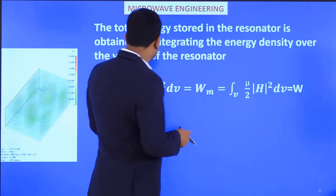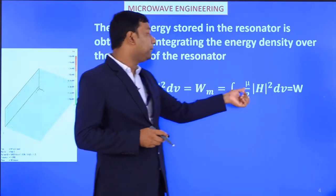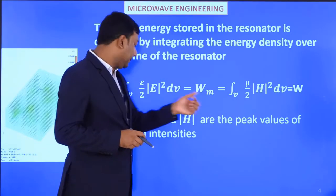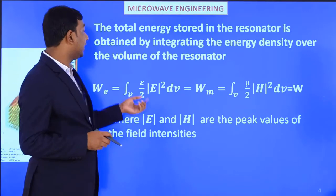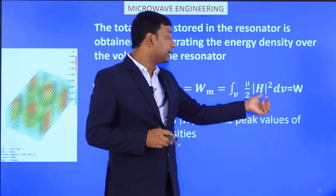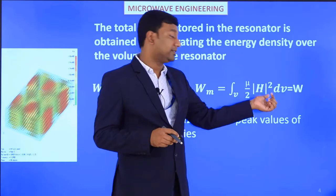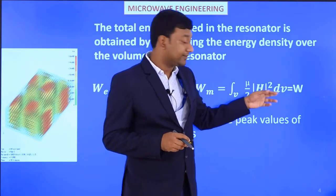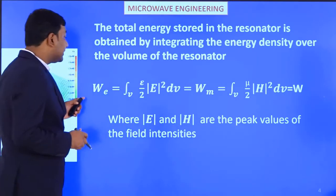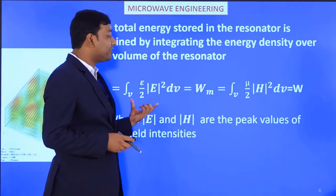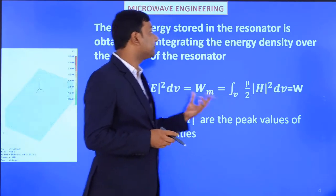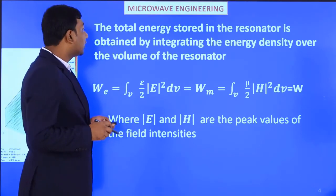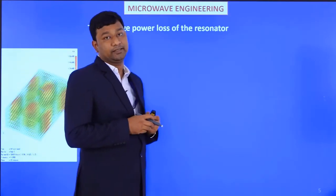Here ε is the permittivity of the medium and μ is the permeability of the medium. E and H are the peak values of the field intensity — E is the electric field intensity and H is the magnetic field intensity. As per our necessity, we can use either equation to find the maximum energy stored in the resonator circuit.